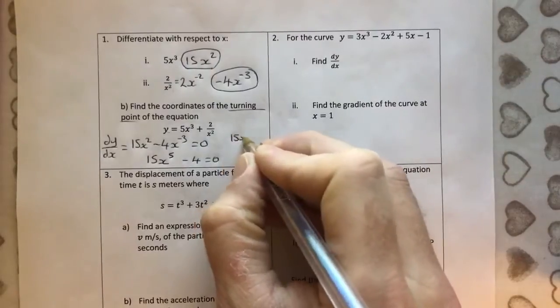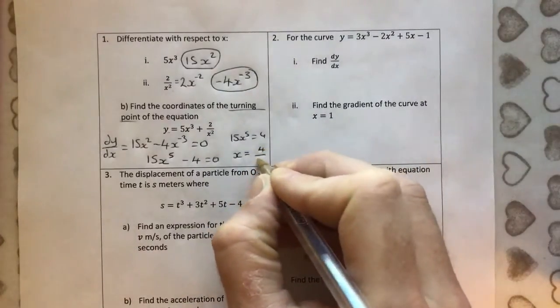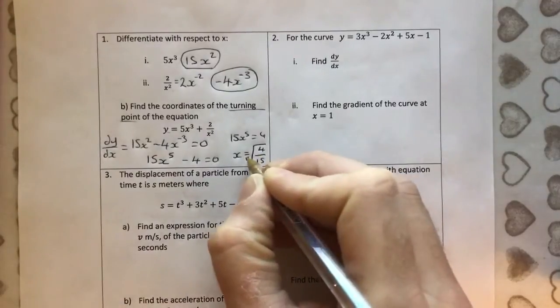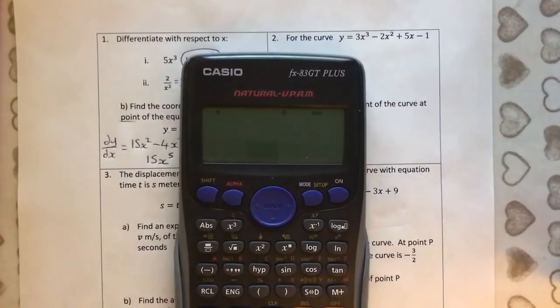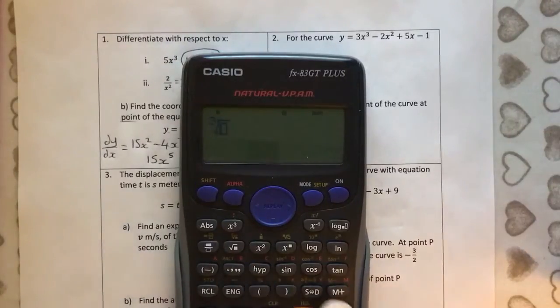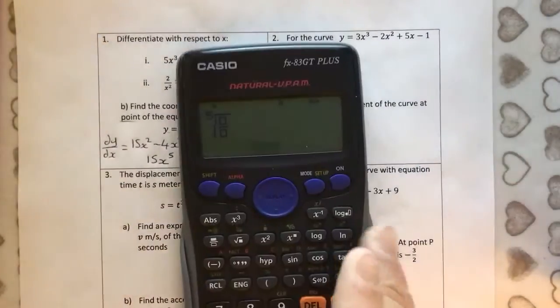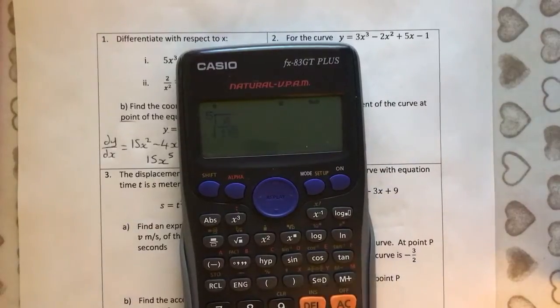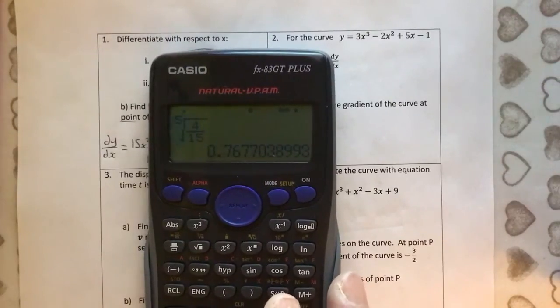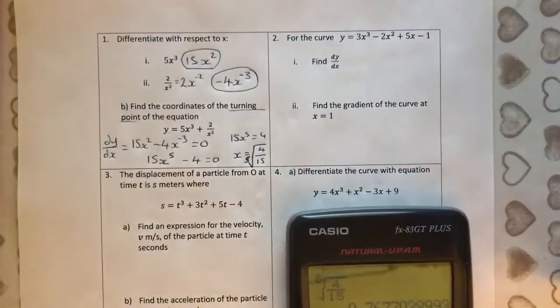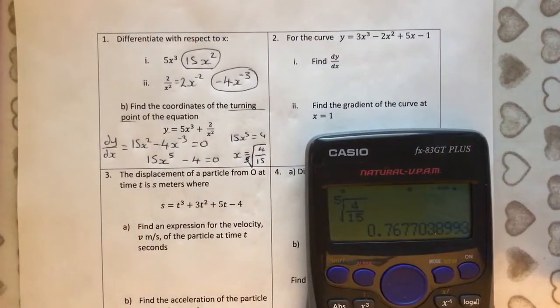So, we've got 15x to the 5 equals 4. So, x is going to be 4 divided by 15, and then the 5th root of 4 over 15. So, goodness only knows what that is. Let's give it a go. Shift any root. We want the 5th root of the fraction. What's the fraction? 4 over 15. And it's thinking about that, we get this number 0.7677, etc. So, 3 sig fig, or that 0.768. Or you could just leave it like that. That's nicer, because that's the precise value. And then we don't have to worry about rounding. Okay.